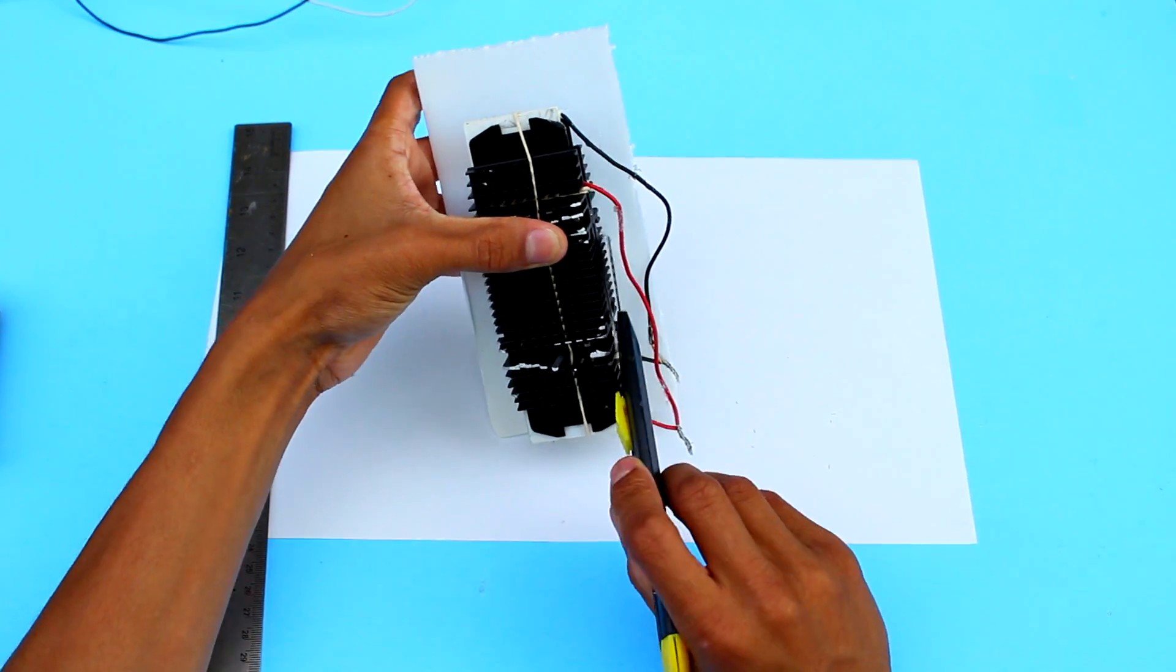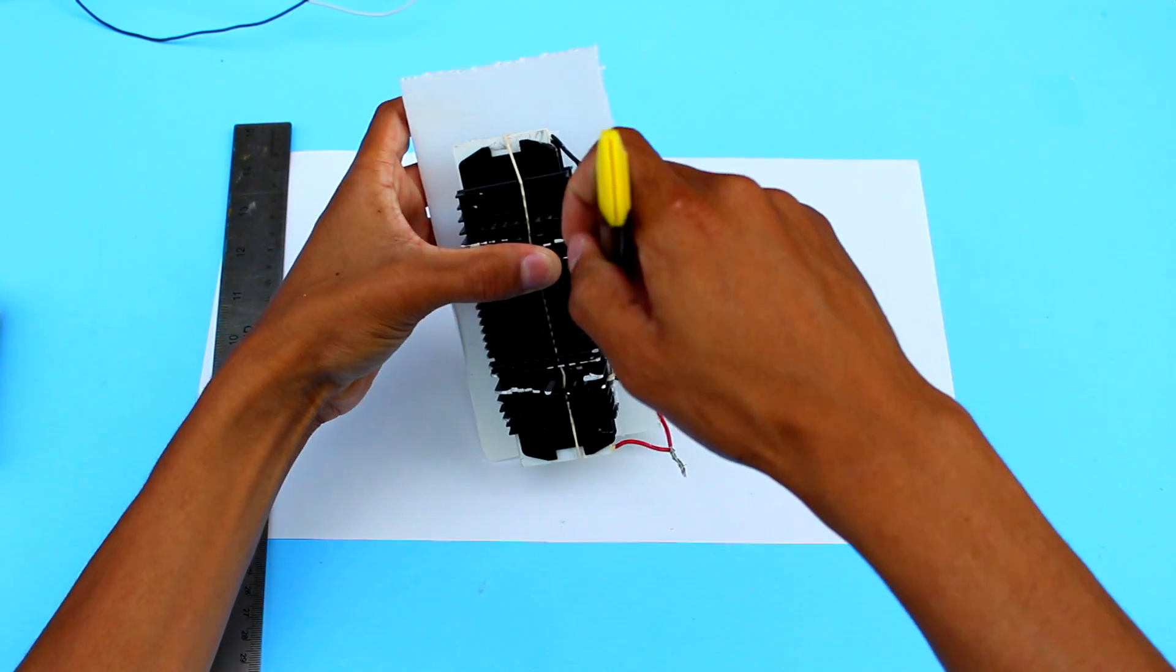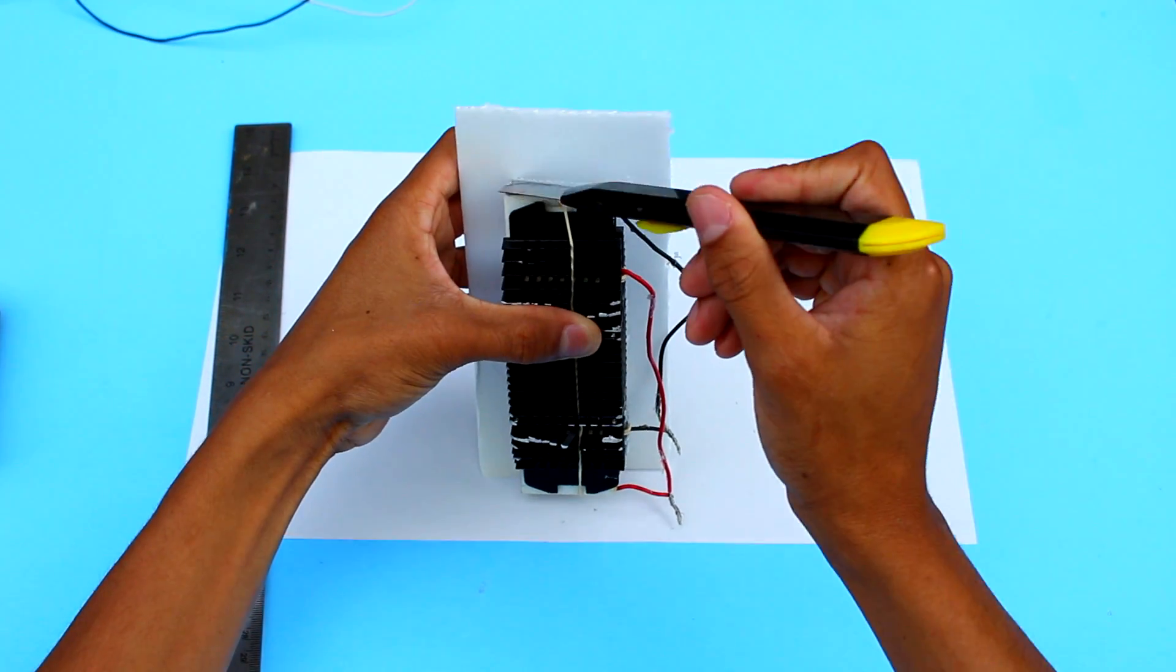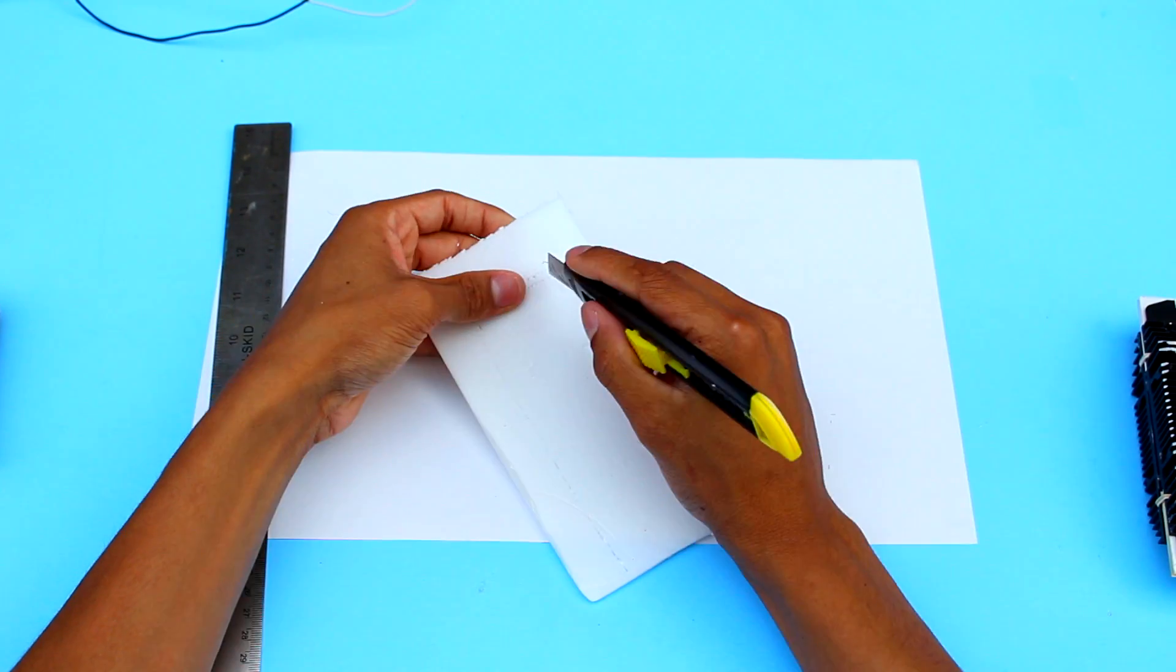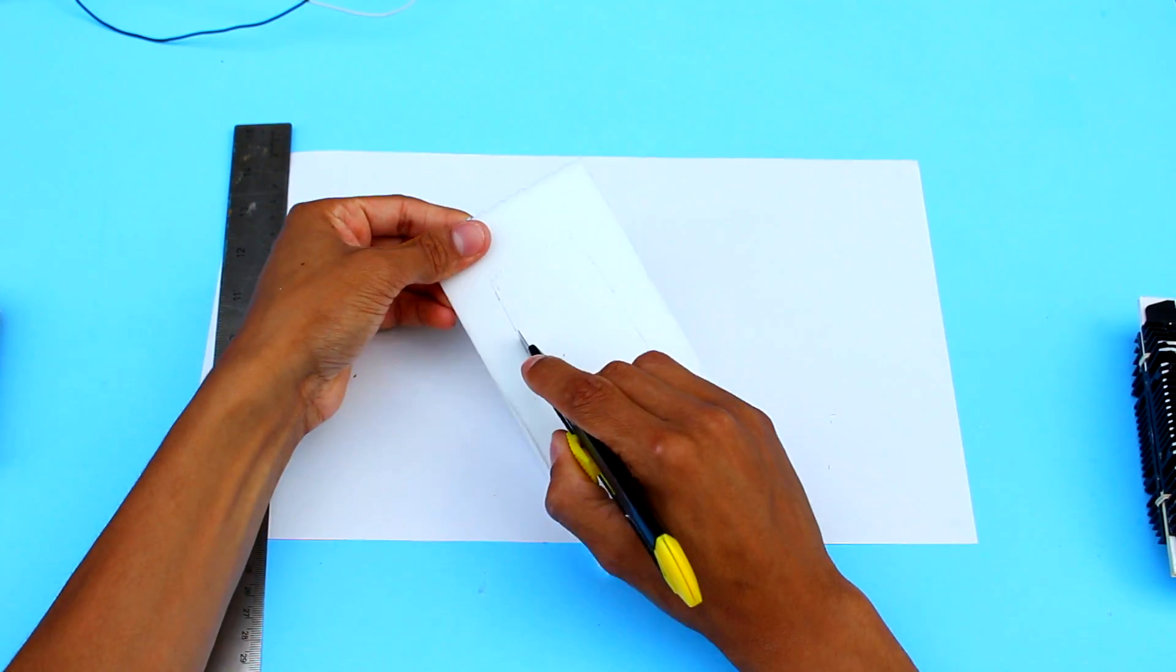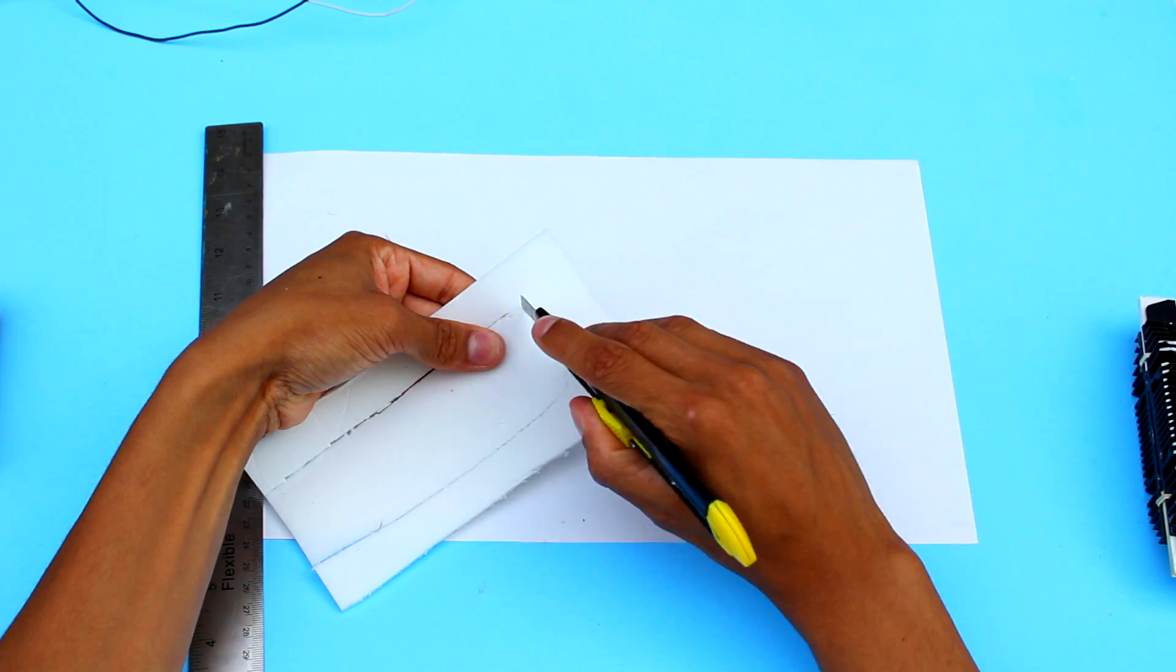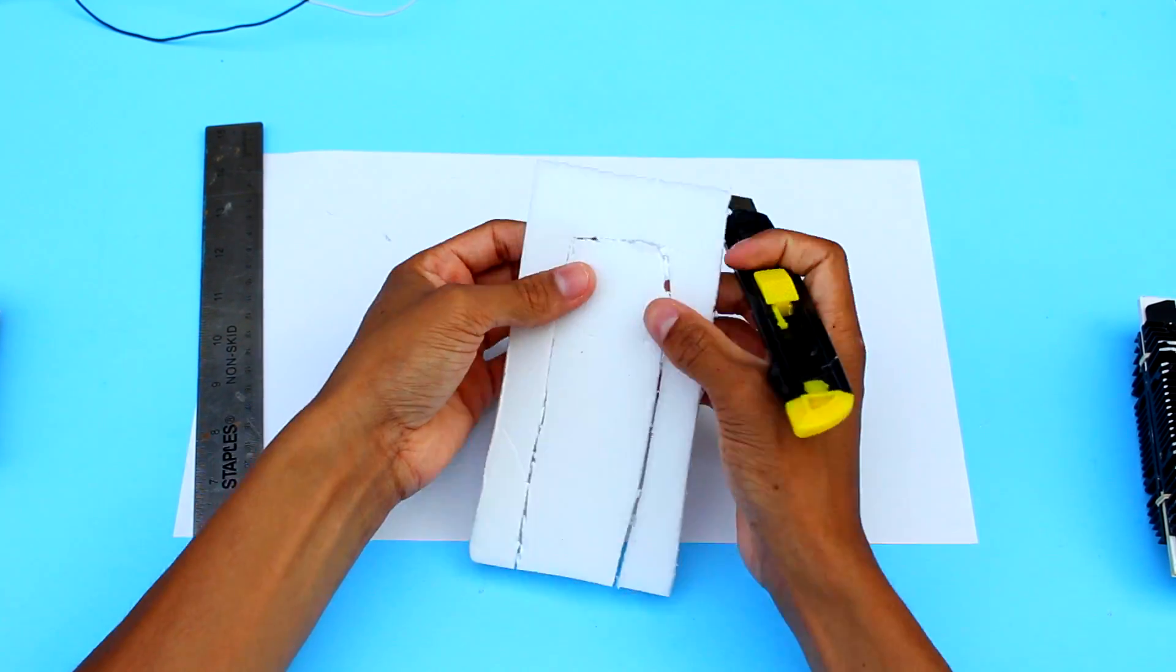After cutting out the base, we are going to be putting the heatsink contraption with the Peltier elements into the styrofoam base. This will make it so that one side of it will become hot, one side will become cold, and they will be separated by the styrofoam base.